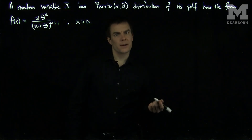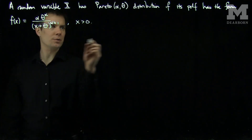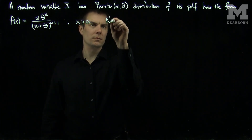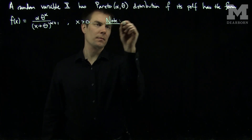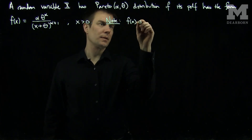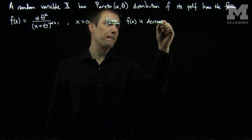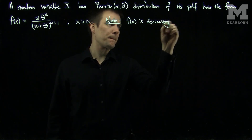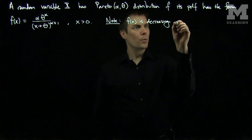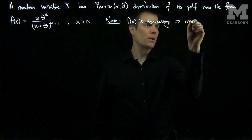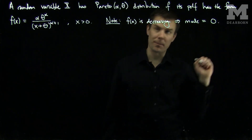So let's find some properties of this Pareto distribution. First, note f of x is decreasing on 0 to infinity, which implies the mode of the Pareto distribution is 0.